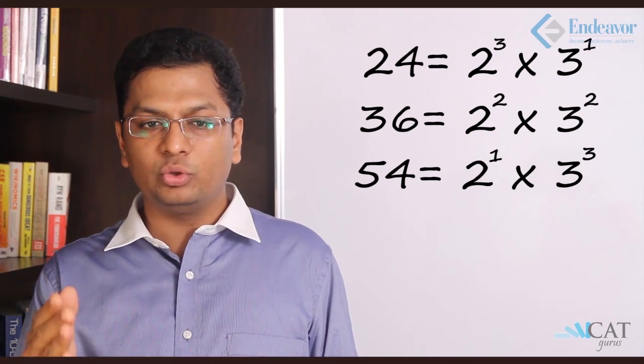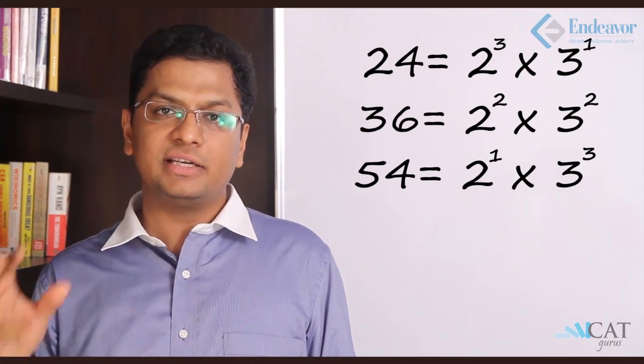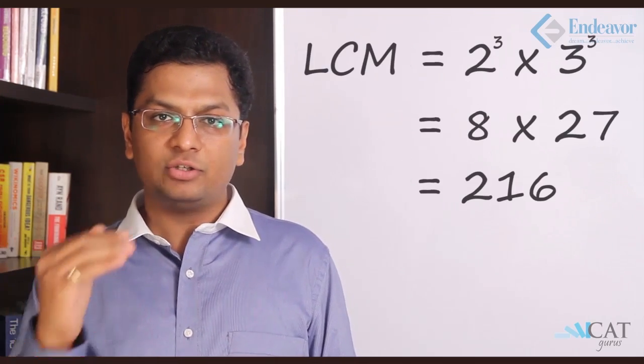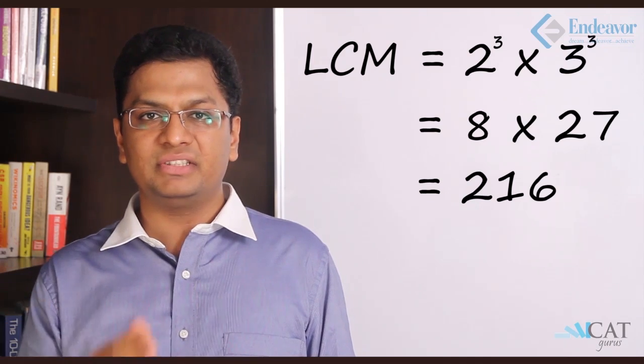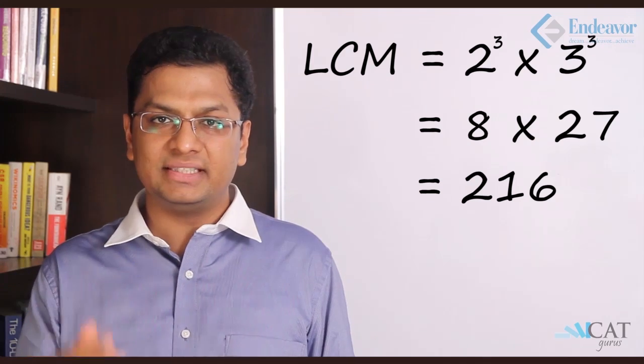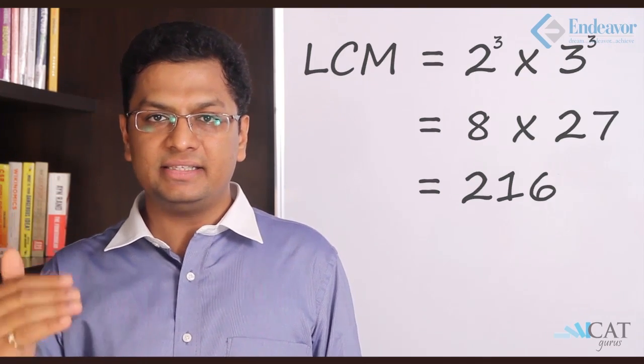So 3 to the power 1, 3 to the power 2, and 3 to the power 3. So highest is 3 to the power 3. So let's take 2 to the power 3 into 3 to the power 3 which is 8 into 27 which is 216. Now this is the LCM.